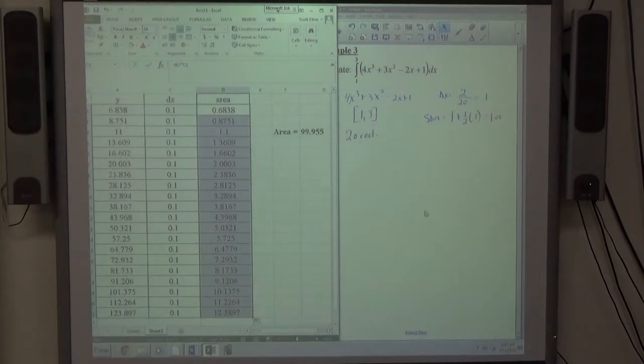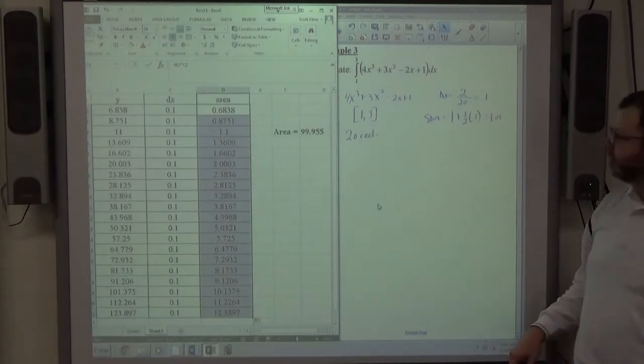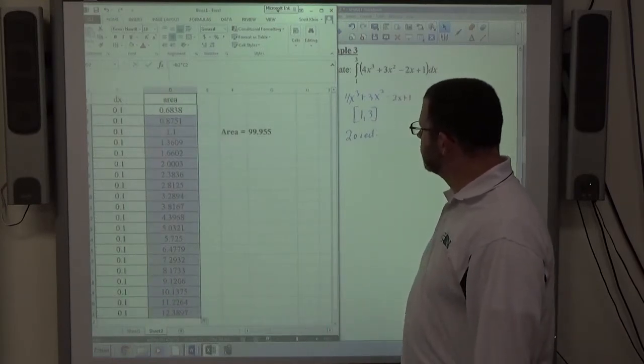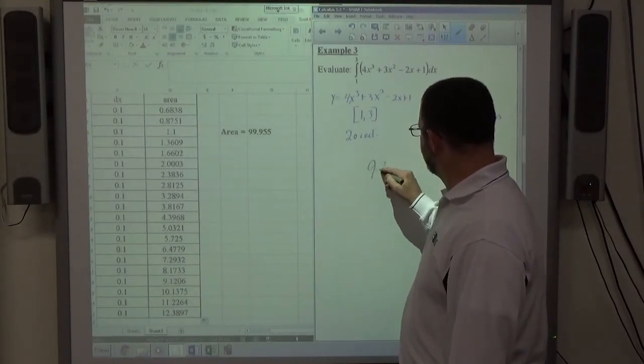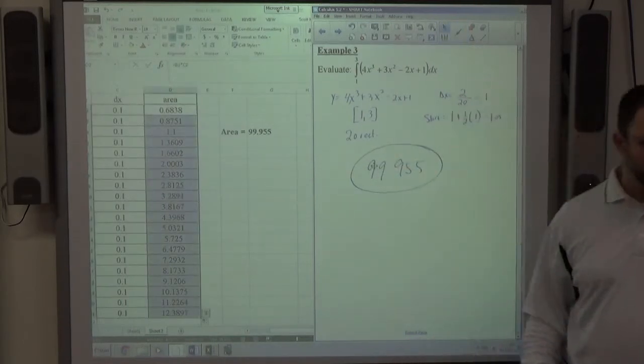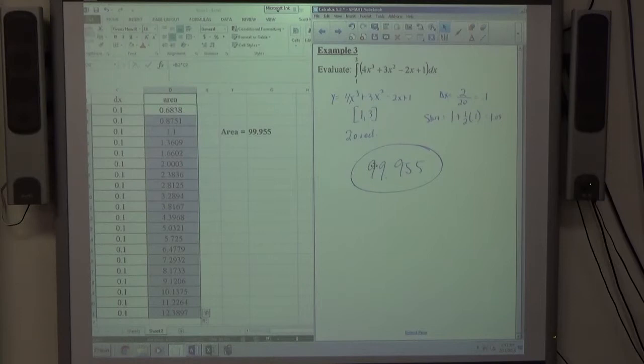And slide over to where my area is, 99.955, which is the approximate value of that integral.